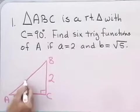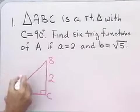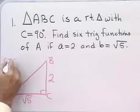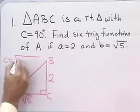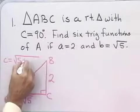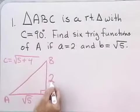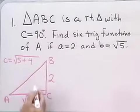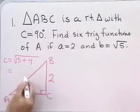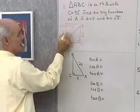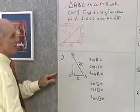I can find the length of the hypotenuse using the Pythagorean theorem. C equals the square root of a squared plus b squared, which is the square root of 4 plus 5. That equals the square root of 9, which is 3. So the hypotenuse is 3.